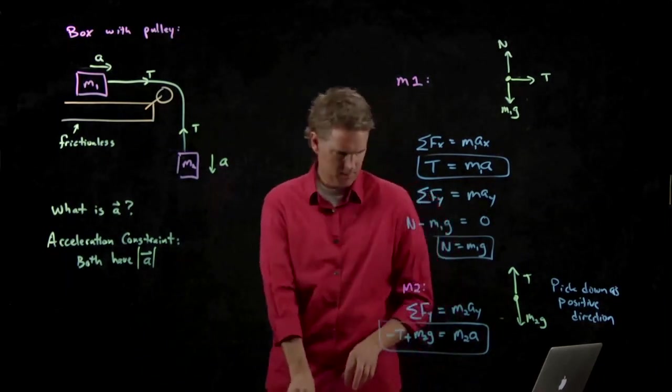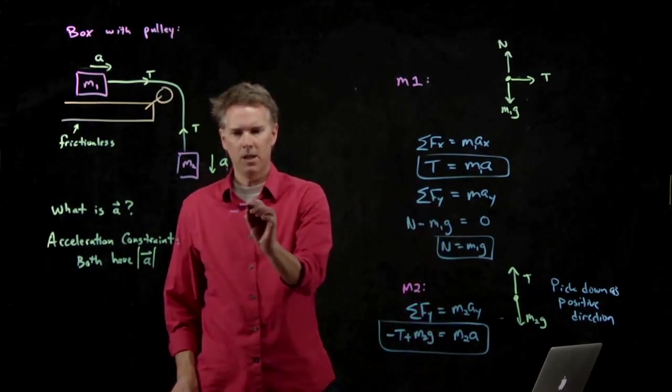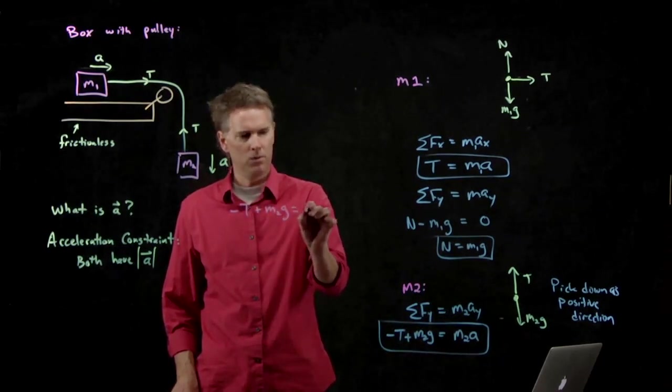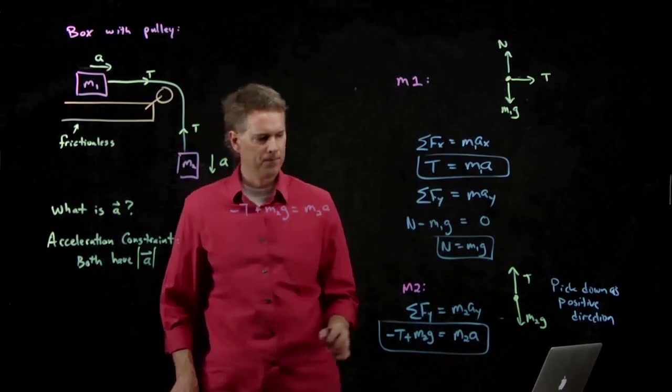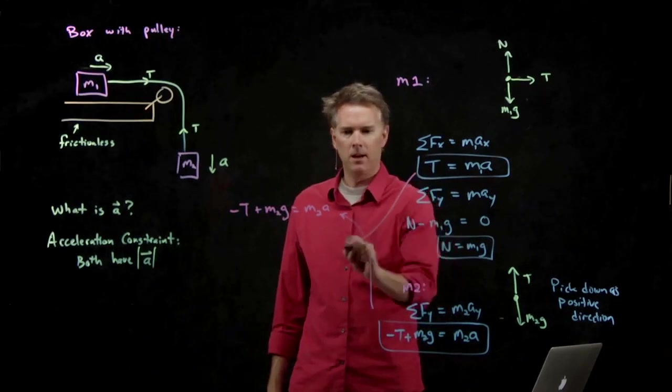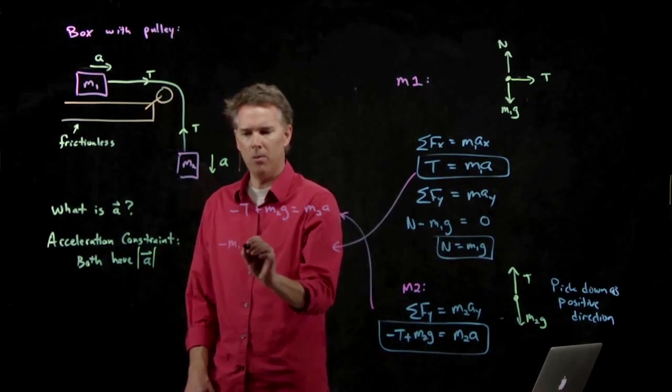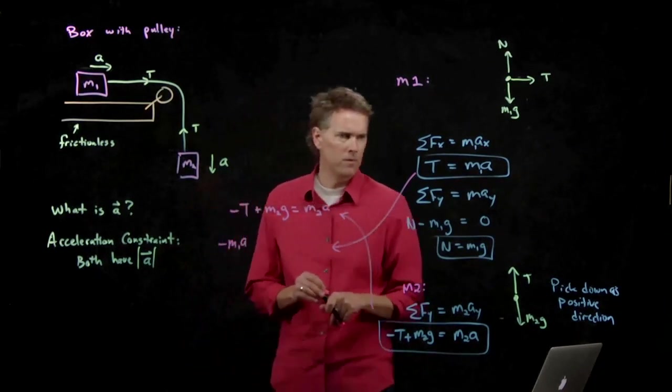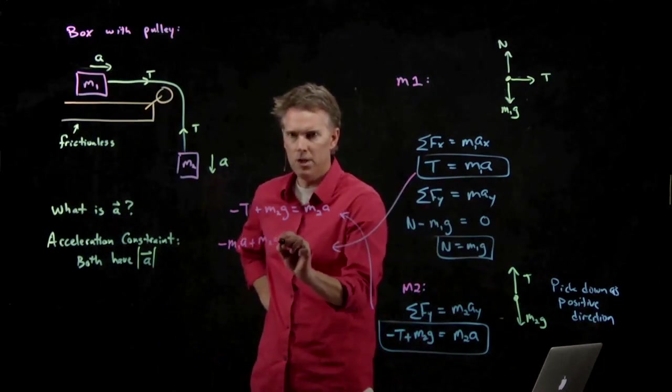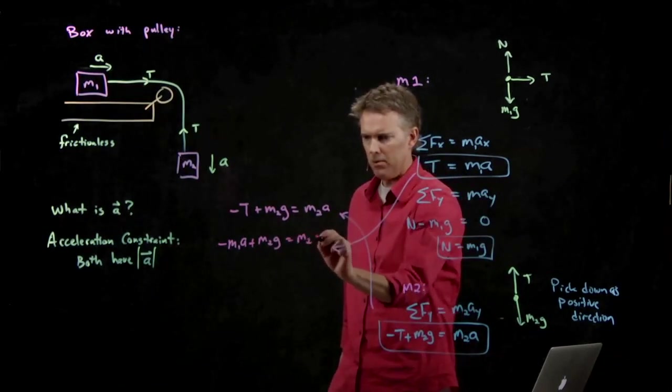So now can we solve this thing for A? Yeah. It doesn't look too bad. Right? We've got a nice little equation here that says minus T plus M2g equals M2a. And I can take T from that equation and put it right in here. So I get minus M1a plus M2g. All of that equals M2a.